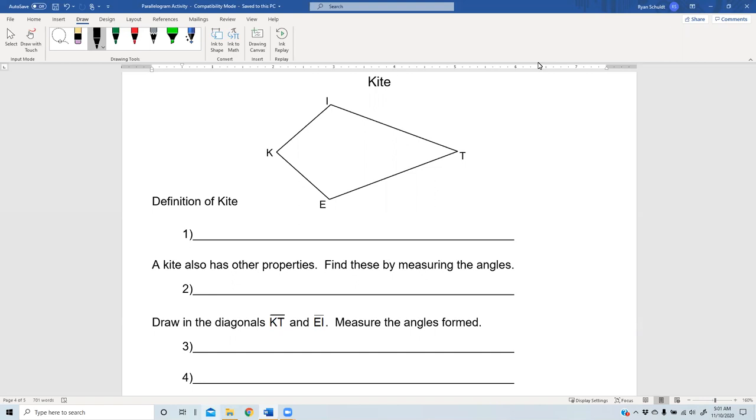So if you were to measure this kite, you would find something that may be interesting. In particular, you'd find that KI and KE are the same, and IT and ET are the same. That's because that's the definition of a kite. A kite has two sets of consecutive sides—remember, consecutive means side by side or one after the other—two sets of consecutive sides congruent.